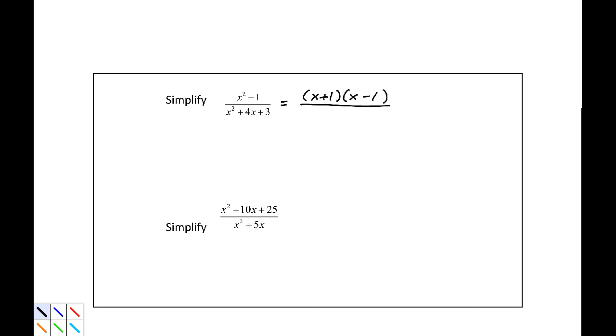And our denominator will factor as x plus 1 multiplied by x plus 3 quantity. We have a 1 of x plus 1 over x plus 1, so this reduces to x minus 1 divided by x plus 3.